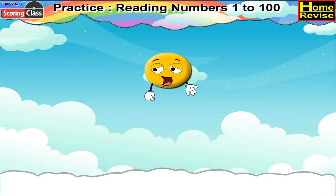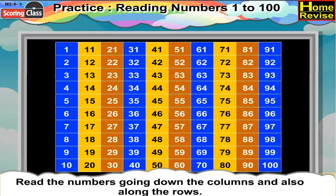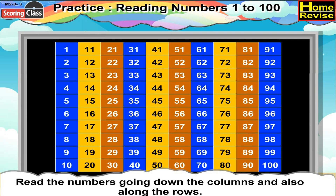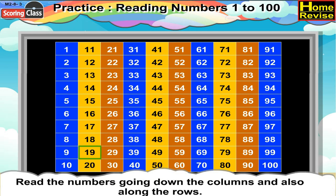Practice reading numbers 1 to 100. Read the numbers going along the columns and also along the rows. If you notice these numbers from top to bottom, along the column it is 1, 2, 3, 4, 5, 6, 7, 8, 9, 10. The next column is 11, 12, 13, 14, 15, 16, 17, 18, 19, 20.